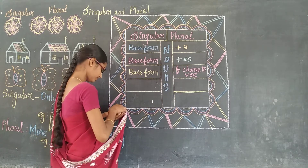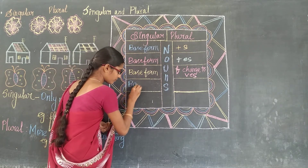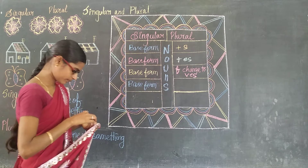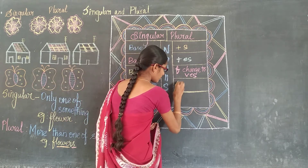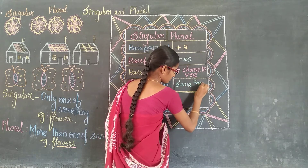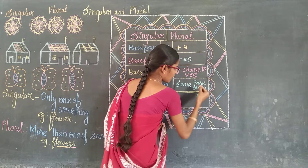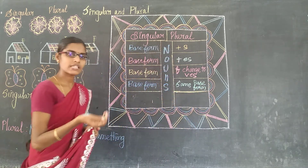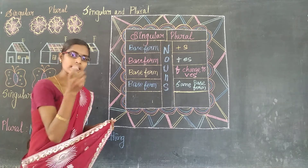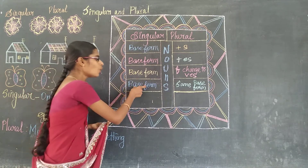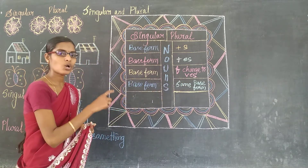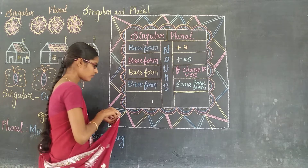And the fourth rule: for some singular nouns, there is no plural form — it is the same for singular and plural. No change — same base form for plural also. No change in base form. And the fifth — last one: base form becomes a new word.